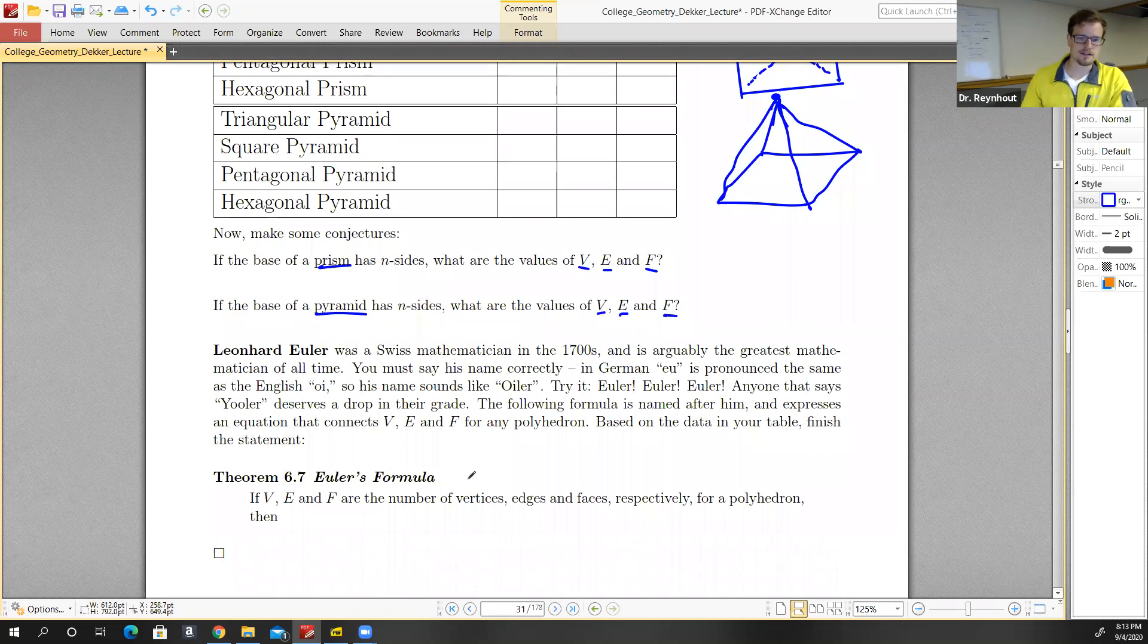And then, this is a very important name in mathematics. Leonard Euler. This is not Euler. No, it is Euler. Euler. So Swiss mathematician from the 1700s, arguably the greatest mathematician of all time.